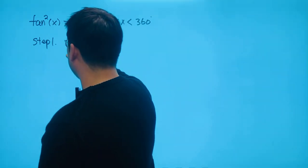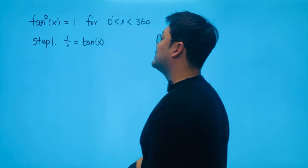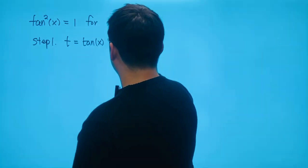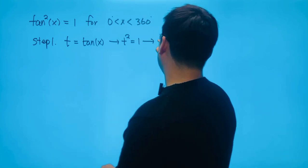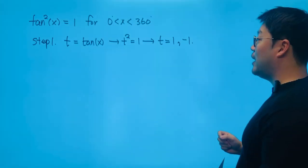We're going to set t equals tangent x, which makes sense because it's tangent x, and we're solving for t this time. That means that we have t squared equals 1.